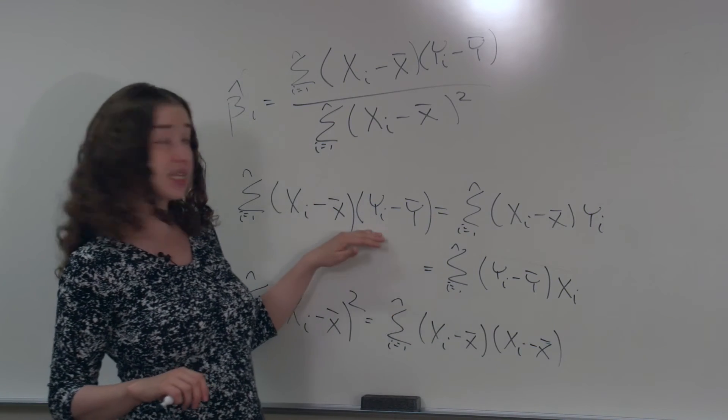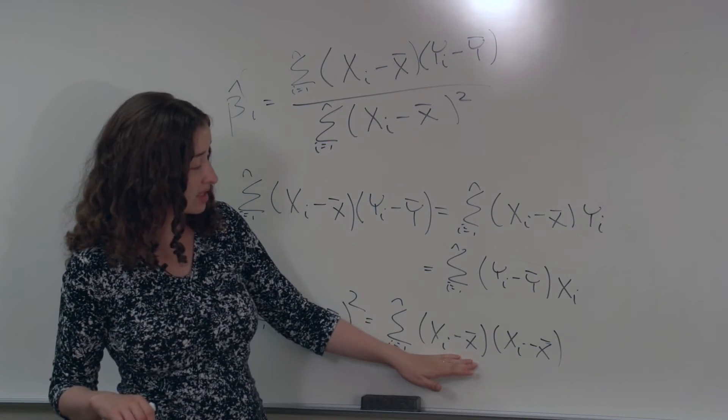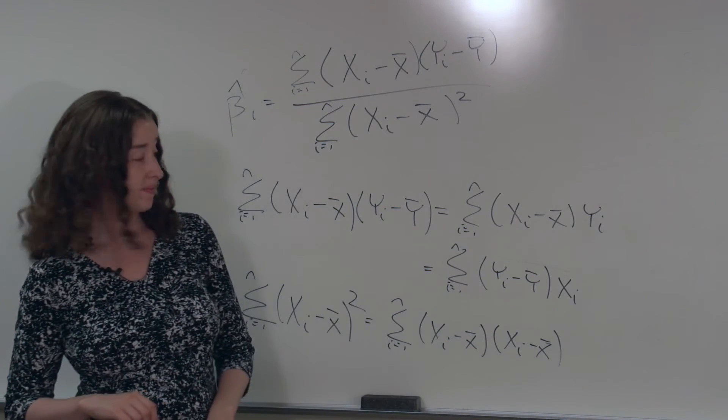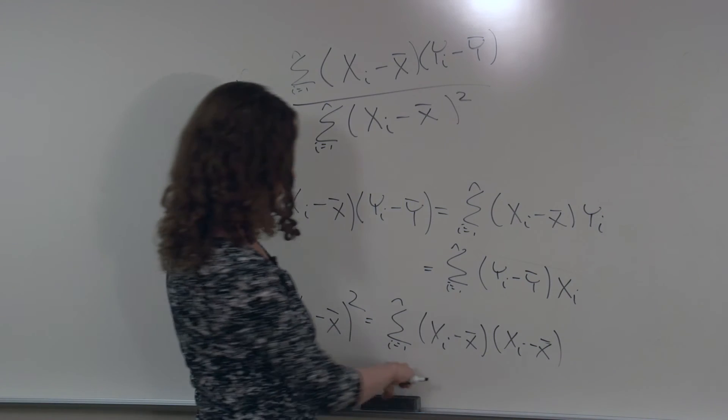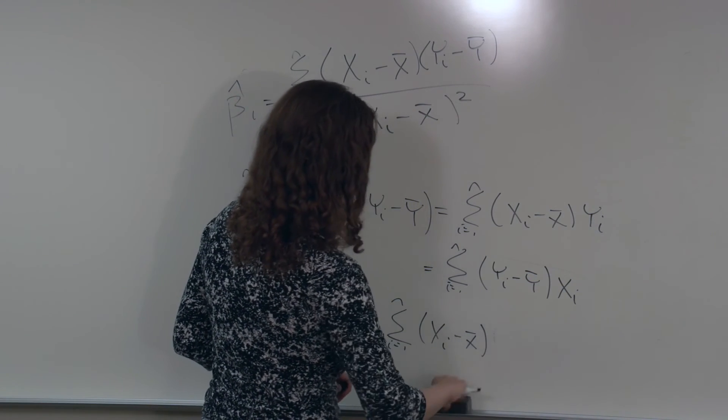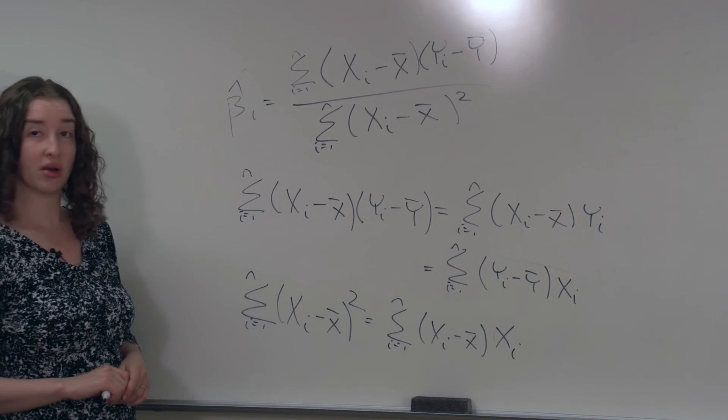And if I went through the same steps I went through up here, xi minus x bar times xi, xi minus x bar times x bar, I would end up with a second term that's equal to 0. So in other words, you don't need that extra x bar here.